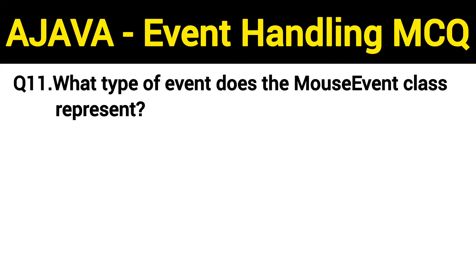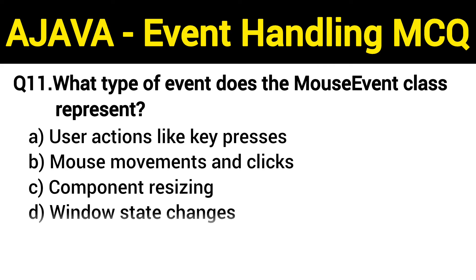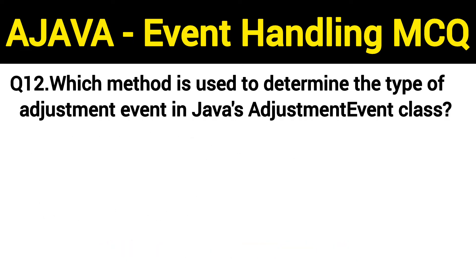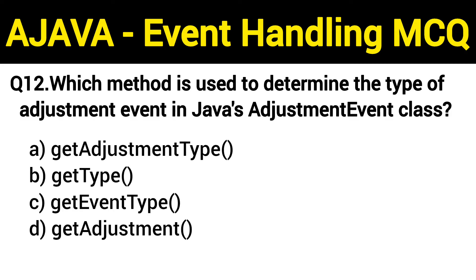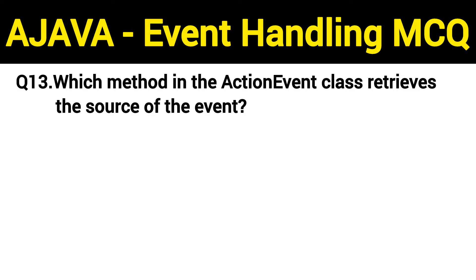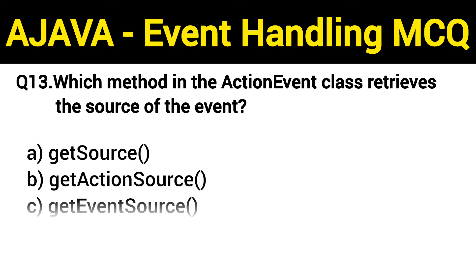Question number 10: how do you remove an event listener from a Swing component? The right answer is option C: using removeActionListener. Question number 11: what type of event does the MouseEvent class represent? The right answer is option B: mouse movements and clicks. Question number 12: which method is used to determine the type of adjustment event in Java's AdjustmentEvent class? The right answer is option A: getAdjustmentType.